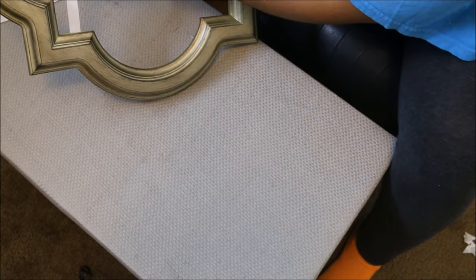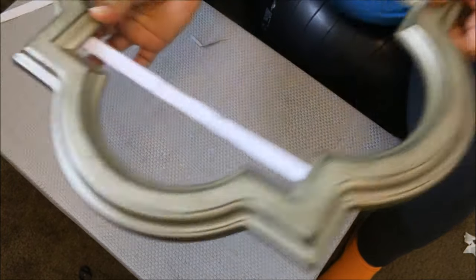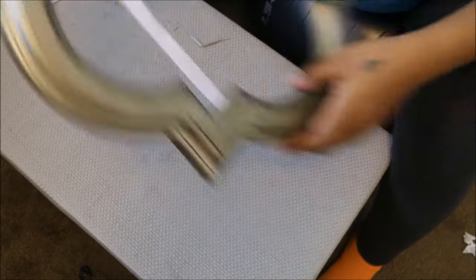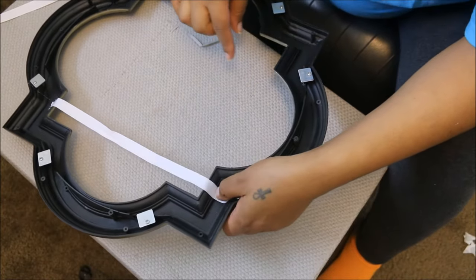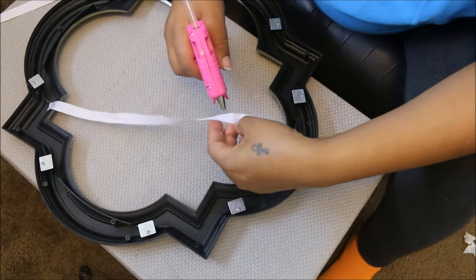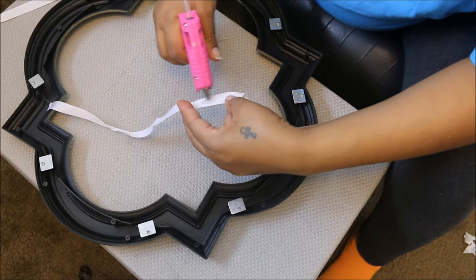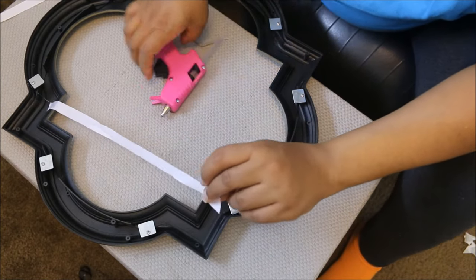And if you have a thimble, I know some people still might have thimbles, like that little metal piece that goes over your thumb when you're sewing. That's really good to use when you're working with hot glue so that you don't burn your fingers. I've just been working with it for so many years that it's just like it is what it is.